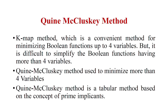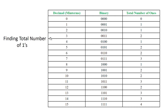The next topic is the Quine-McCluskey method, also called the tabulation method. When the number of variables is more than 4, we cannot use K-Map efficiently, so we use this method instead. The approach involves listing minterms with their corresponding binary representations and finding the total number of 1s in each binary value — for example, 0 has zero 1s, 1 has one 1, 2 has one 1, 3 has two 1s, and so on.